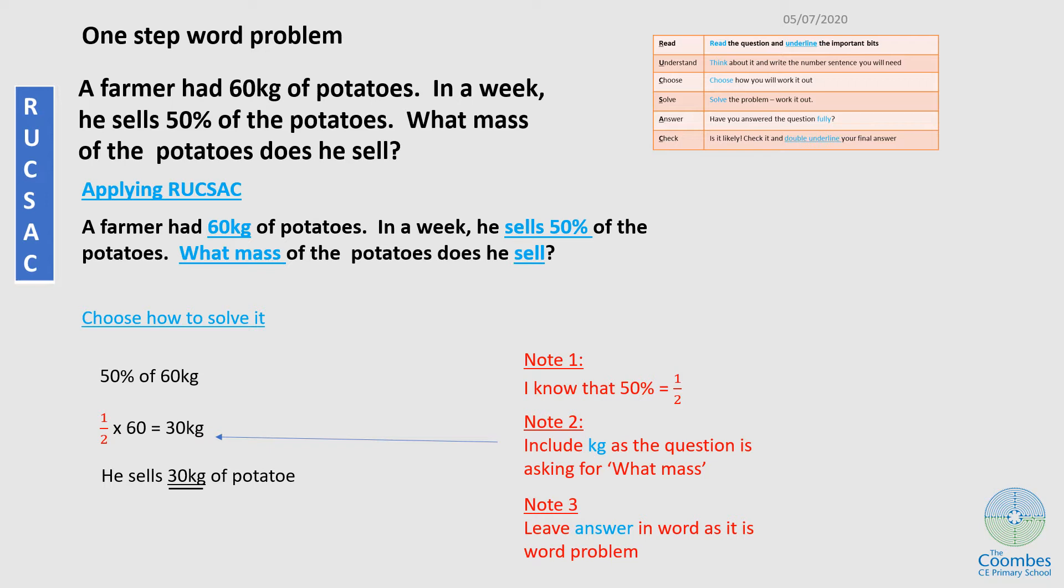Now I'm going to apply RUCKSACK to this. And the first is to read and underline. So the important bits that I can underline are the 60 kg of potato. Then it also says he sells 50%. So I can underline sells 50%. The other part says what mass. So I can underline that and then sell is another word to underline.